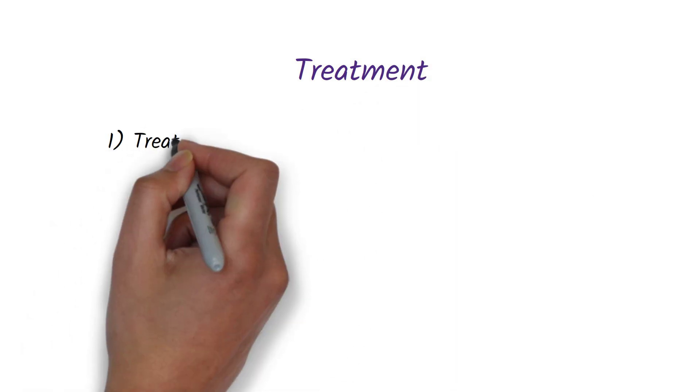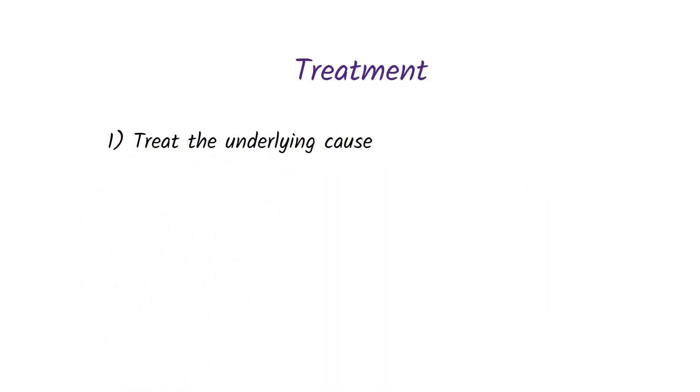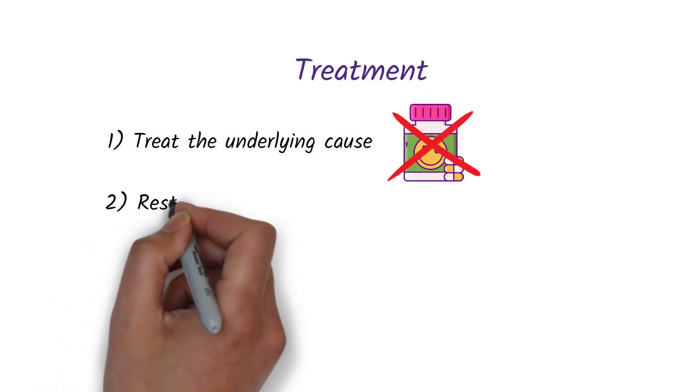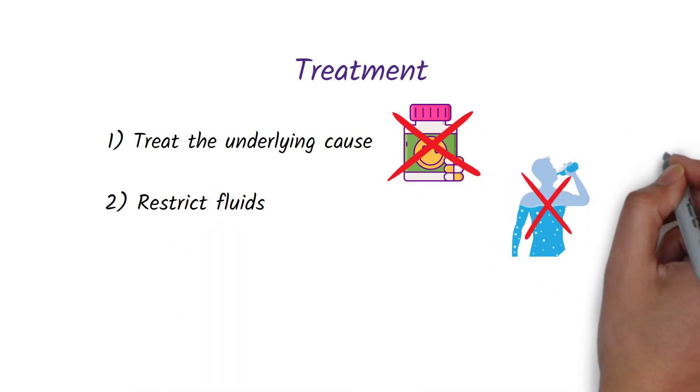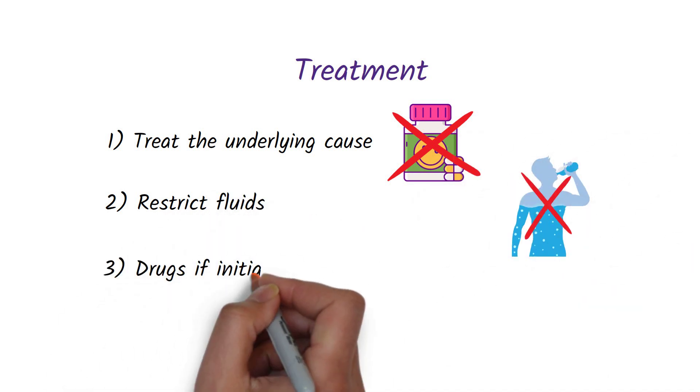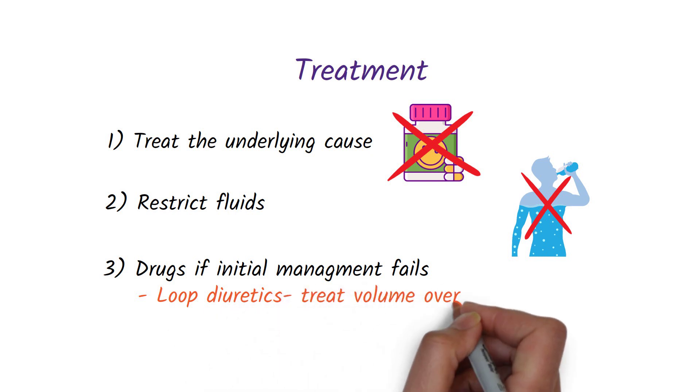When treating SIADH, first treat the underlying cause. For example, if SIADH is due to a drug, stop the drug. Restrict fluid intake. You can turn to drugs like loop diuretics to treat volume overload.